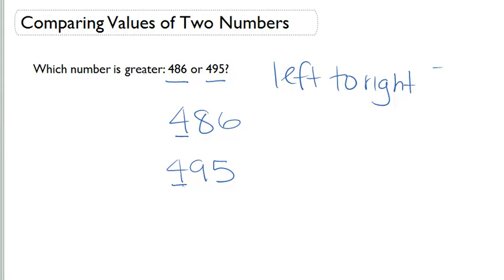The next numbers are in the tens place. We have 8 versus 9. We know that 9 is bigger than 8. So we know that 495 must be greater than 486.